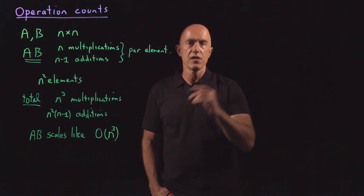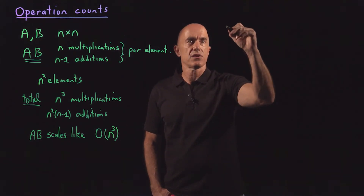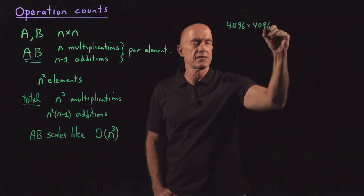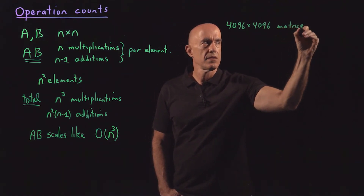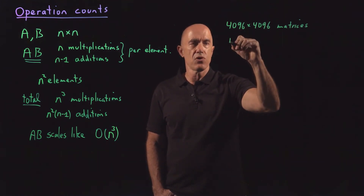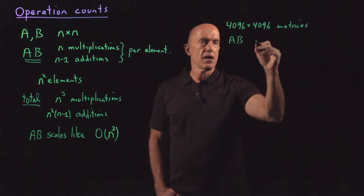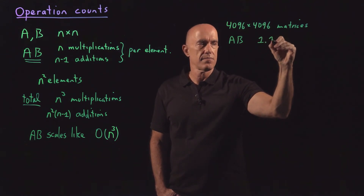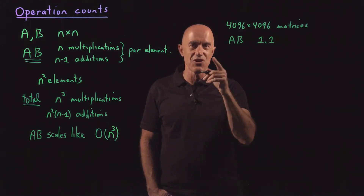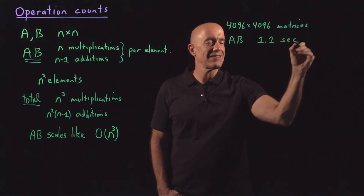Let me show you why it's useful. If I program in MATLAB two random matrices A and B — 4096 by 4096 matrices — I use the random number generator, generate the two matrices, multiply them together, and time how long it takes. Computers these days are much faster, and it only takes 1.1 seconds.